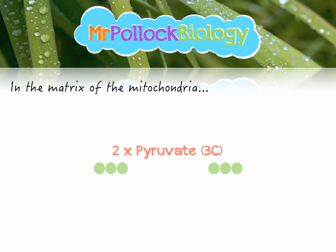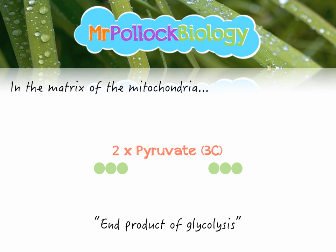Here we are after glycolysis. We've got two molecules of pyruvate — those three-carbon compounds that are the end product of glycolysis. These are now in the matrix of the mitochondria, where the link reaction takes place. Glycolysis takes place in the cytoplasm, so we produce pyruvate in the cytoplasm and then transport it into the matrix — the enzyme-filled soup of the mitochondria — via a specific protein channel that passes through the outer and inner mitochondrial membranes, bridging glycolysis and the link reaction.